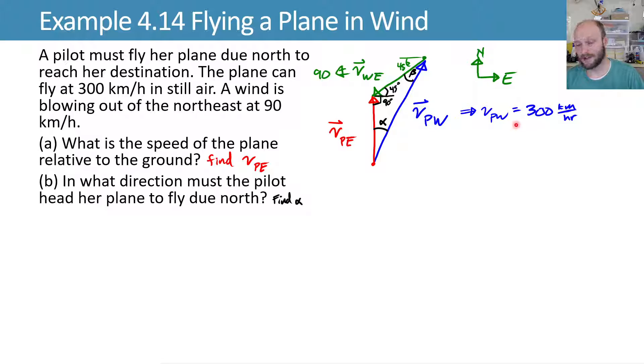This VPW from the problem statement is the plane can fly 300 kilometers per hour in still air, so the velocity of the plane with respect to the wind is 300 kilometers per hour. And our relative motion statement then becomes VPE is equal to VPW plus VWE. The W's relate on the inside, so that's how we get that. In other words, VPW plus VWE gives us VPE.